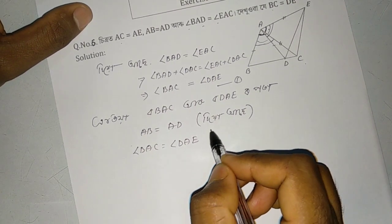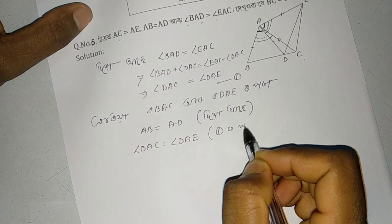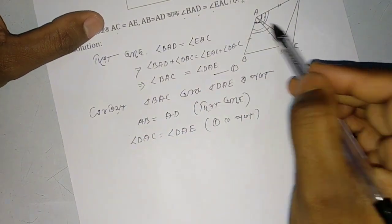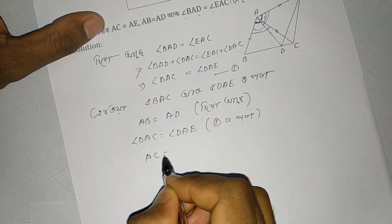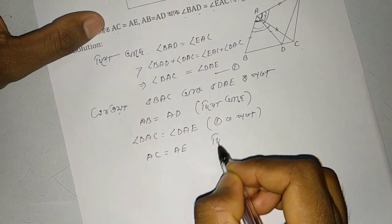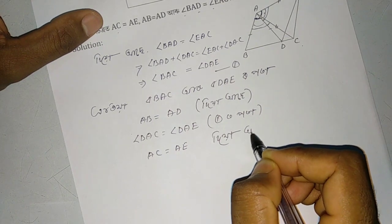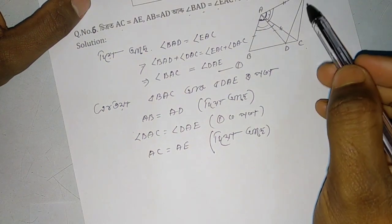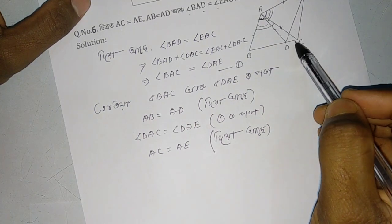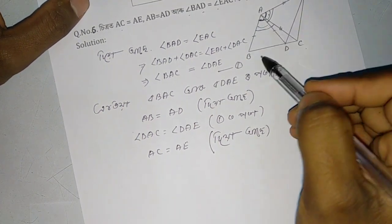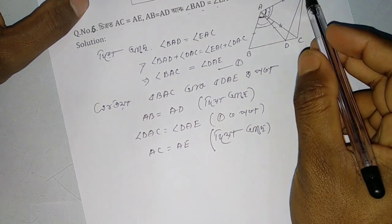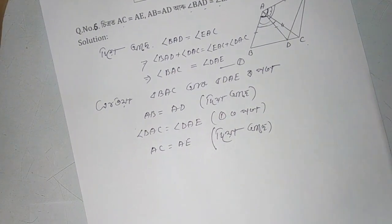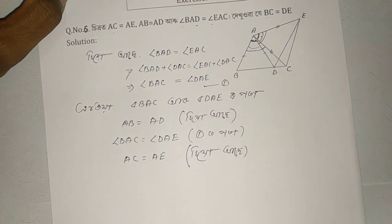From the given conditions: AC equal to AE, AB equal to AD, and angle BAC equal to angle DAE. Therefore by SAS congruence, triangle BAC is congruent to triangle DAE.